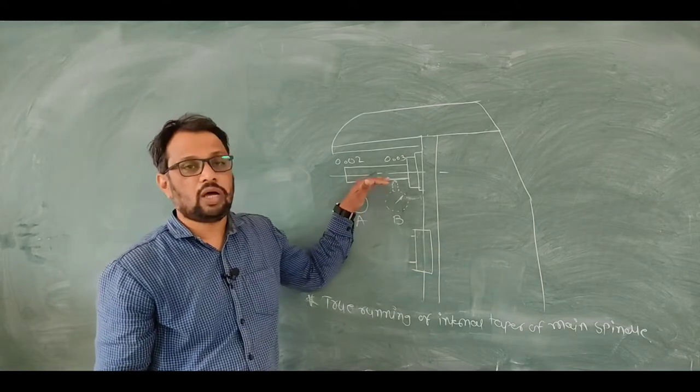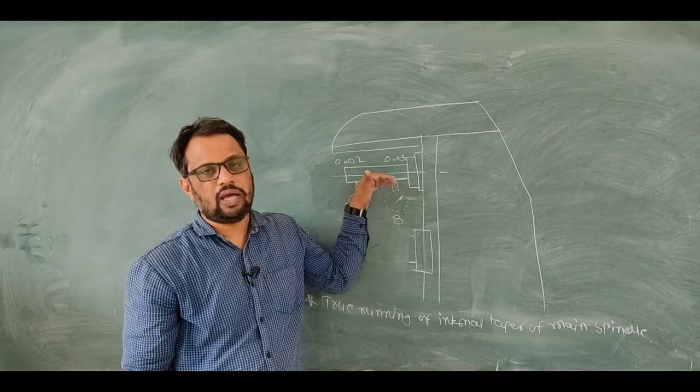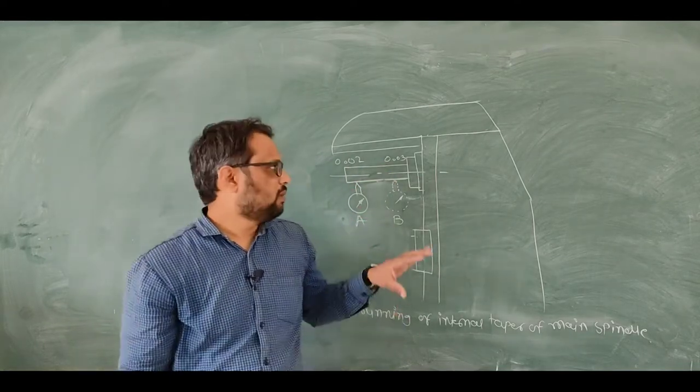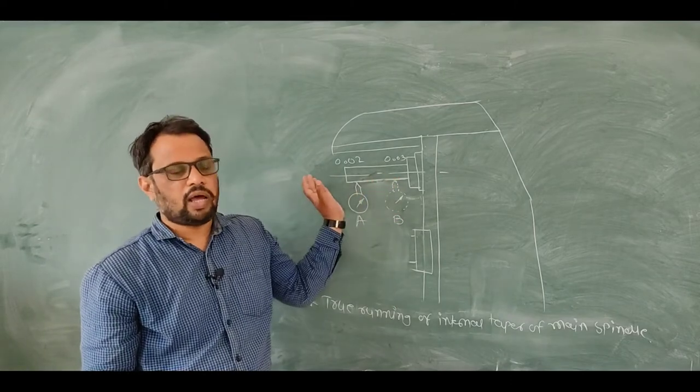There is an R bar on which you are going to mount a cutter on this R bar. But now I have removed the R bar and placed one mandrill, 300mm length mandrill.